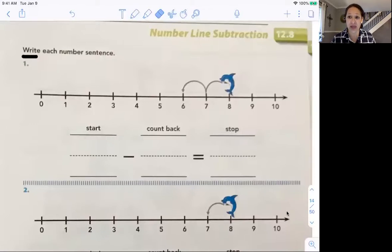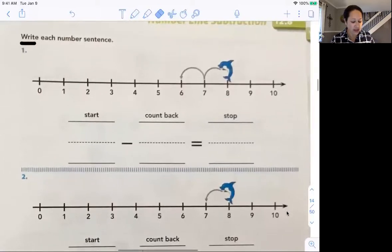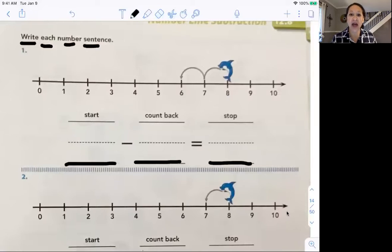Remember we had the hippity hoppity kangaroo to add? This time we have a Mr. Dolphin and it says to write each number sentence. Now we're going to be using the number line to subtract. That means that instead of going to the right, like Mr. Kangaroo did, we're going to jump like a beautiful dolphin going the opposite way. That means that you're going to go backwards. You're going the opposite way and the numbers are getting smaller. You're counting down.